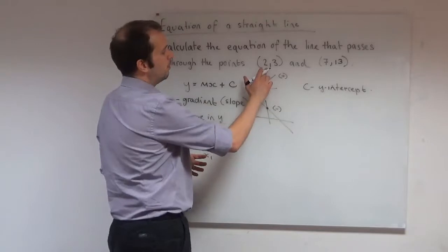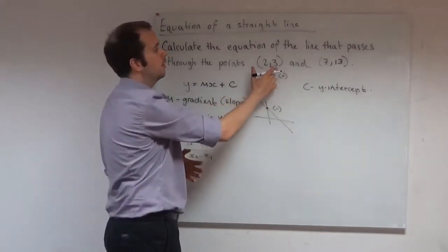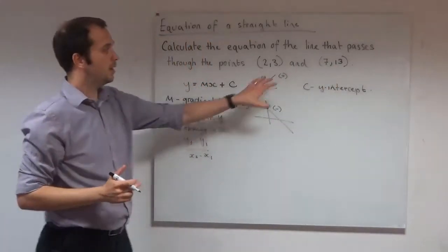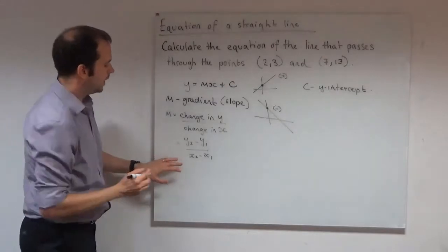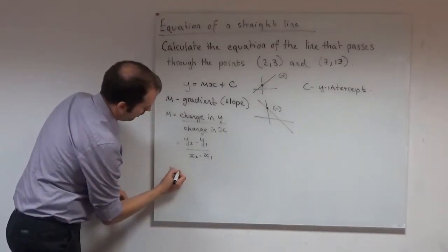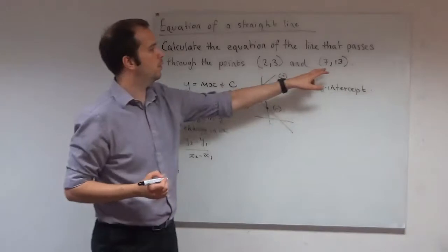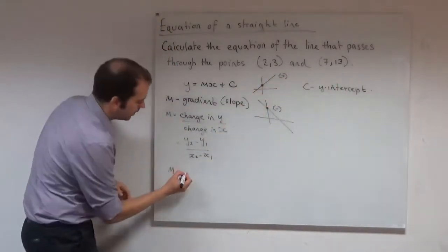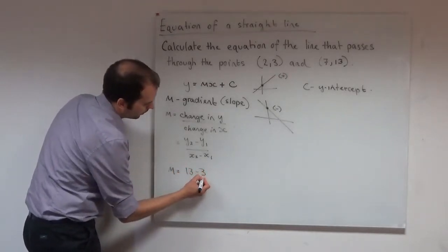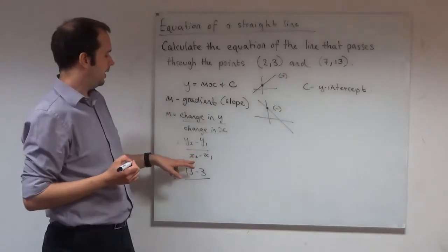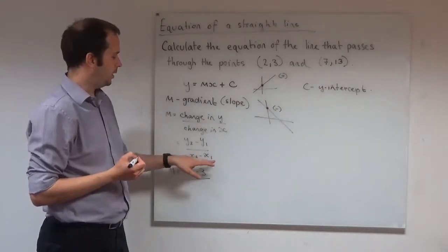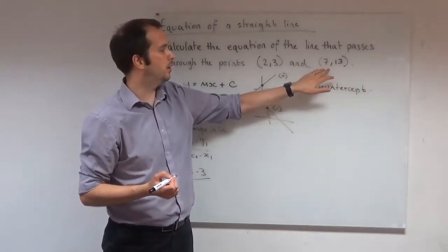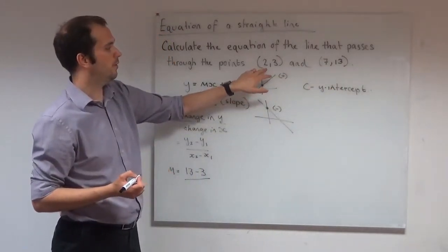So we could call this one x1 and therefore this would have to be y1. And this one x2 and this one y2. So let's go with that. What's our gradient going to be? We've just said it's y2 minus y1 and we've called this one y2 and this one y1. So it's going to be 13 minus 3. And then in our denominator it's x2 minus x1. So if that was my y2, this one's my x2. So that's going to be 7 minus x1. So it would be 7 minus 2.